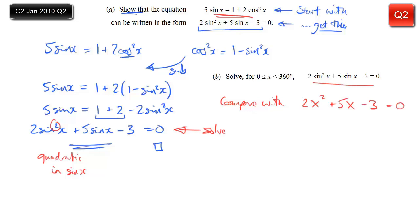We just need to factorise that. 2x² in the front means I'm going to have a 2x and an x. The minus 3 means the two numbers need to multiply to give minus 3 - so it's either 3 and minus 1, or minus 3 and 1. After a quick play around, I can see that it's (2x minus 1)(x plus 3). A quick expand in my head, I double check, and yes, that does give me the correct quadratic.